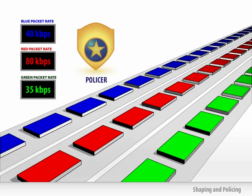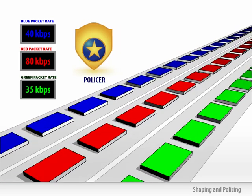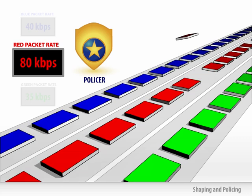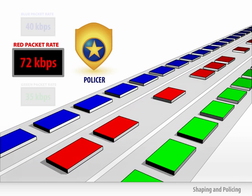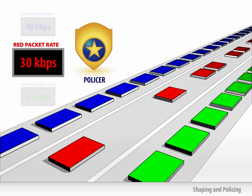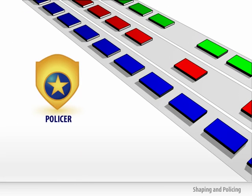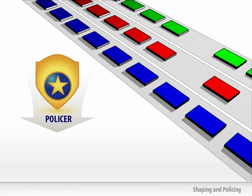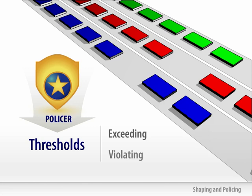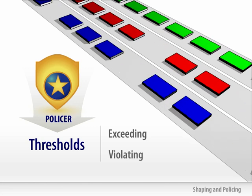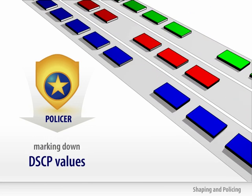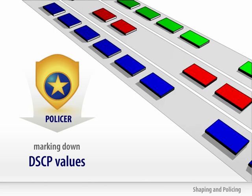The policer will check to see if there is excess traffic, and if excess traffic exists, it can drop the packets in order to conform to that specified rate. The policer can also specify thresholds for exceeding as well as violating, and can take actions that include marking down DSCP values rather than simply dropping packets.